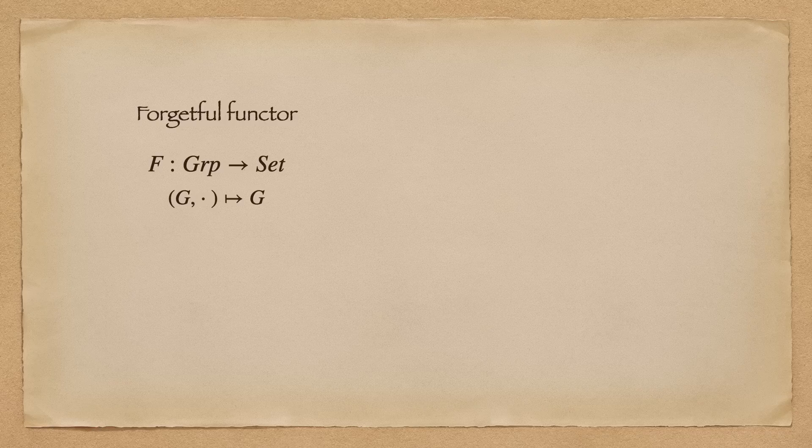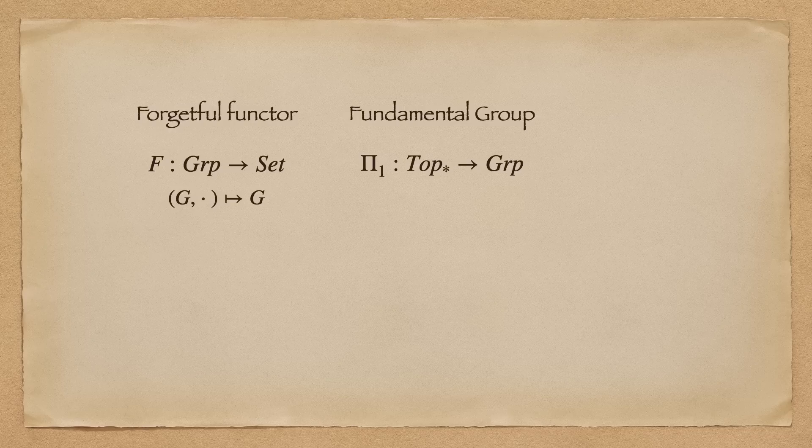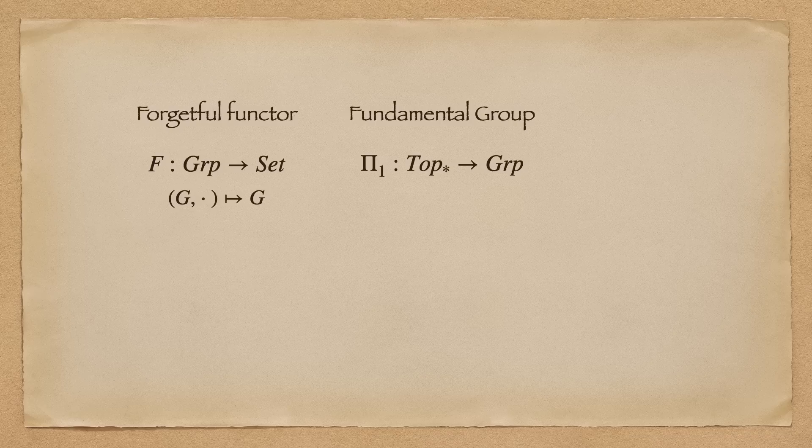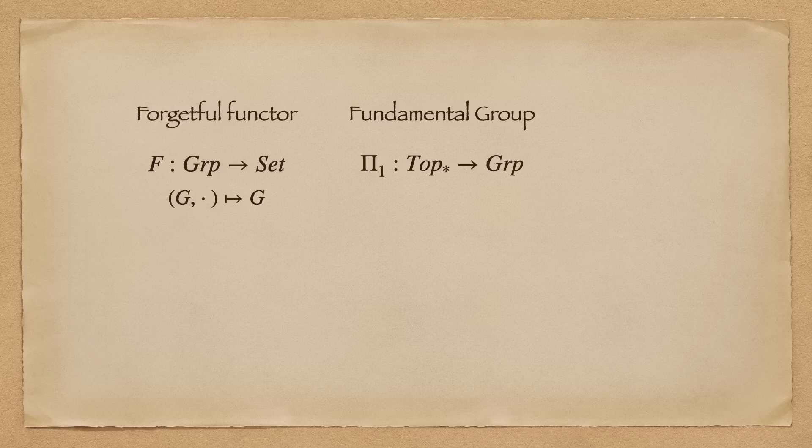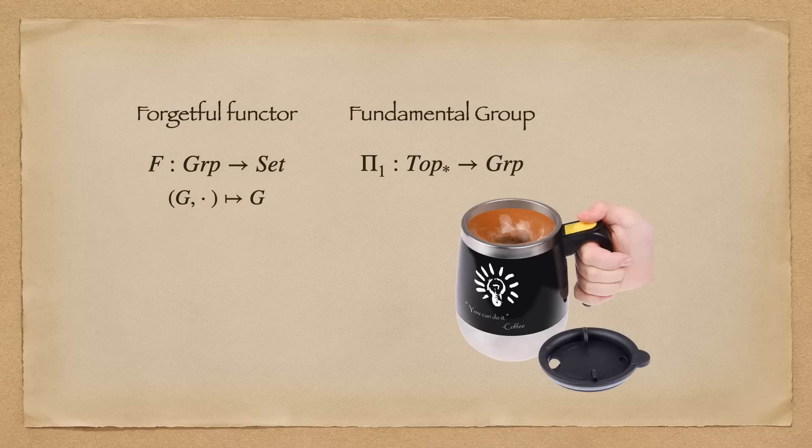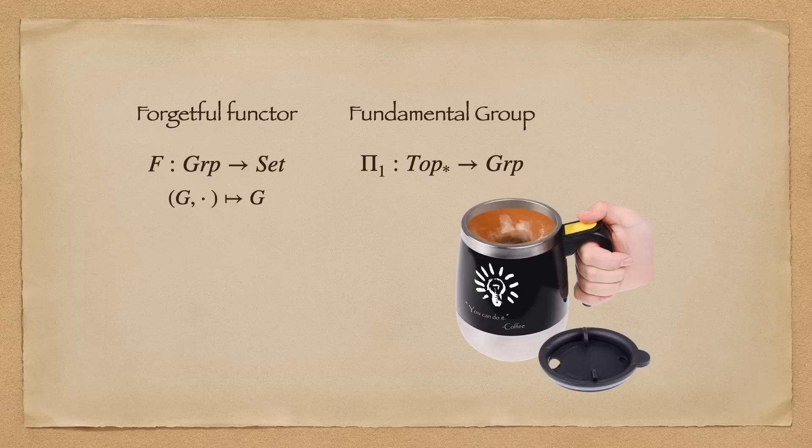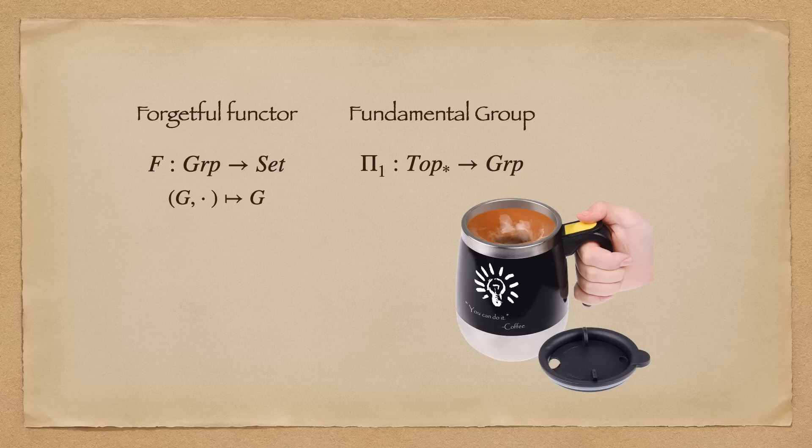A more interesting example is that the fundamental group defines a functor pi1 from the category of topological spaces with fixed basepoints to the category of group. It sends a topological space to its corresponding fundamental group, and a continuous function in topstar induces a group homomorphism acting as the functor in group. This fact, interestingly, can be used to prove Brouwer's fixed point theorem. One of the versions of which roughly says that every continuous function from a closed disk onto itself has at least one fixed point.